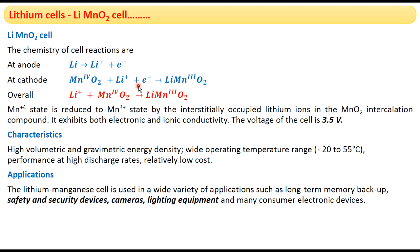Both Li⁺ and one electron reach the cathode where they meet the MnO₂. The cathode reaction is: MnO₂ + Li⁺ + e⁻ → LiMnO₂. So the overall reaction is: Li + MnO₂ → LiMnO₂. Here manganese is reduced from the +4 oxidation state to the +3 oxidation state by the interstitially occupied lithium ions through MnO₂ intercalation.